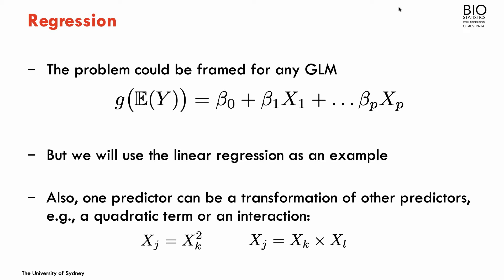The predictors that I'm considering can also include some transformation of other predictors. For example, we could have some of the predictors being the quadratic term of another variable, or some interaction between two or more predictors.